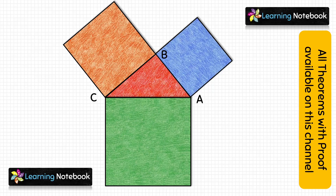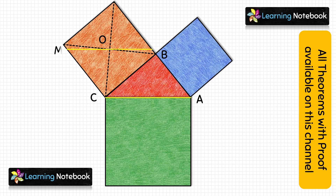Next, draw the diagonals of the orange square and mark their intersection point as O. Through O, draw a line MN parallel to AC. Then draw a line perpendicular to MN passing through O. Now cut this orange square along these lines.